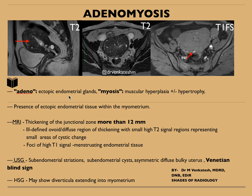"Adeno" refers to ectopic endometrial glands, and "myosis" refers to muscular hyperplasia or hypertrophy. So this is the classic imaging feature of adenomyosis — along with the ectopic endometrial tissue, the myometrium will be showing hyperplasia.